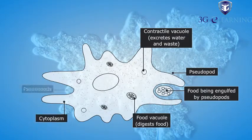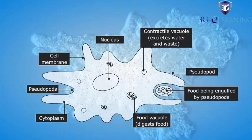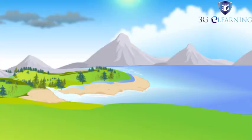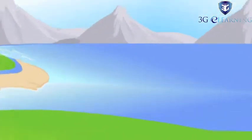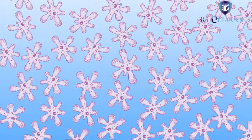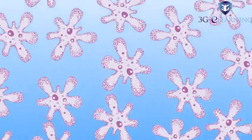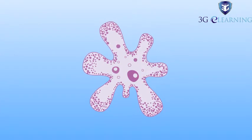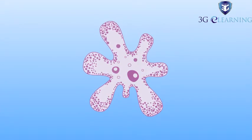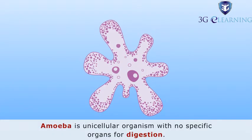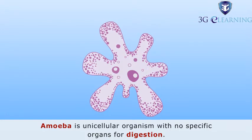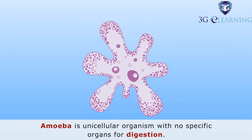Let us begin with the simplest of animals, the amoeba. It lives in water and has only one cell, unlike human beings who have millions of cells in their bodies. Amoeba is a unicellular organism with no specific organs for digestion.